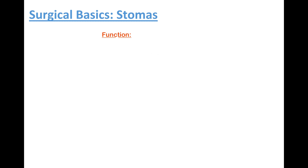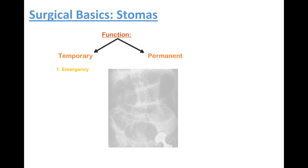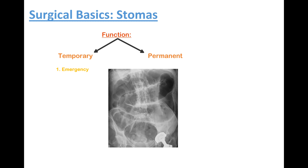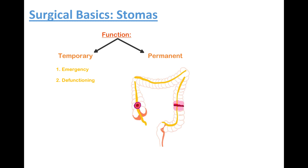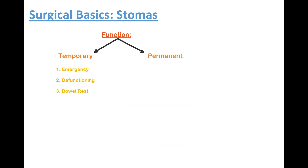Let's talk about the function and use of stomas now with some examples. I think the best way to describe this is based on if they're permanent or temporary. We might temporarily create a stoma for three main reasons. Firstly, in an emergency — for example, if we wanted to relieve a complete large bowel obstruction and prevent rupture and peritonitis. Secondly, for the purpose of defunctioning the bowel to protect a distal anastomosis at risk of breaking or leaking. Finally, for the purpose of bowel rest, allowing for distal inflammation to rest and recover.